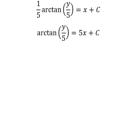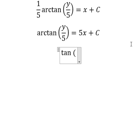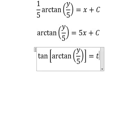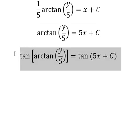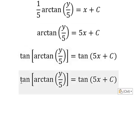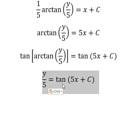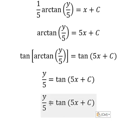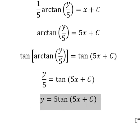Next we put tan for both sides. So tan with arctan, you got y over 5. And then we multiply both sides by 5, and you got the final answer.